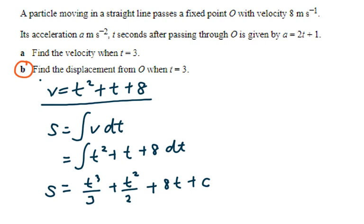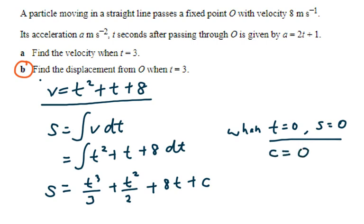Again, using the information from the question — when t equals 0, s equals 0 — we substitute into the displacement equation to find the arbitrary constant. With this information, c equals 0. Hence, the displacement equation is s equals t cubed over 3 plus t squared over 2 plus 8t.